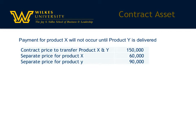In this example, there's a contract price to transfer both product X and product Y for $150,000. Both must be delivered before the company can bill the customer. Separately, the price for X is $60,000 and the price for Y is $90,000. When one is delivered without the other, revenue has been earned, but the related receivable cannot be recorded because the contract will not allow the customer to be billed — it's a conditional right.